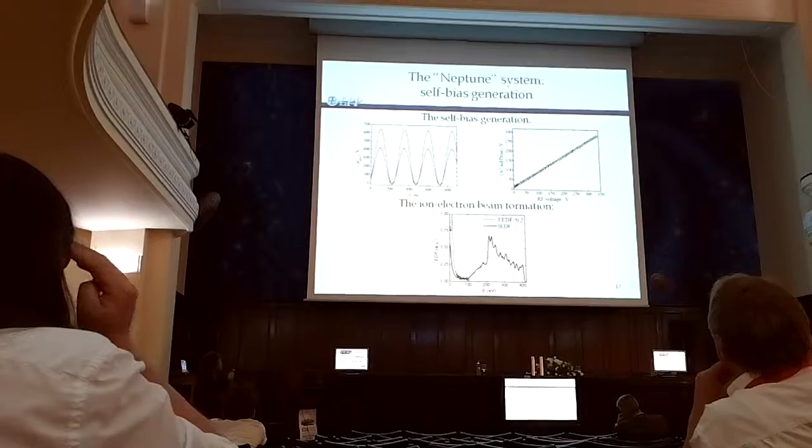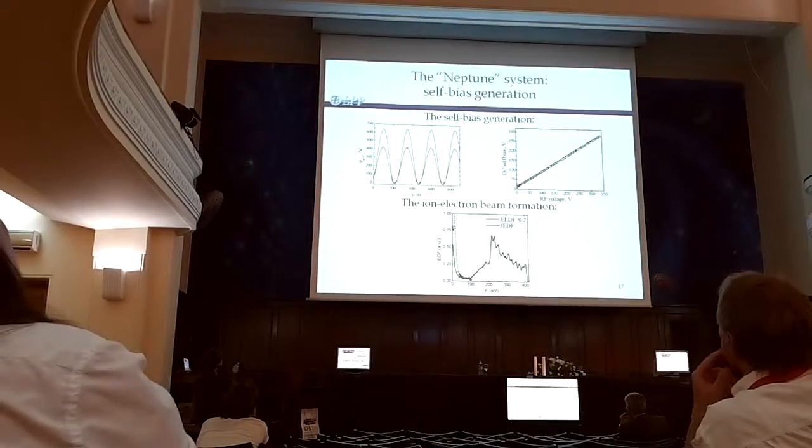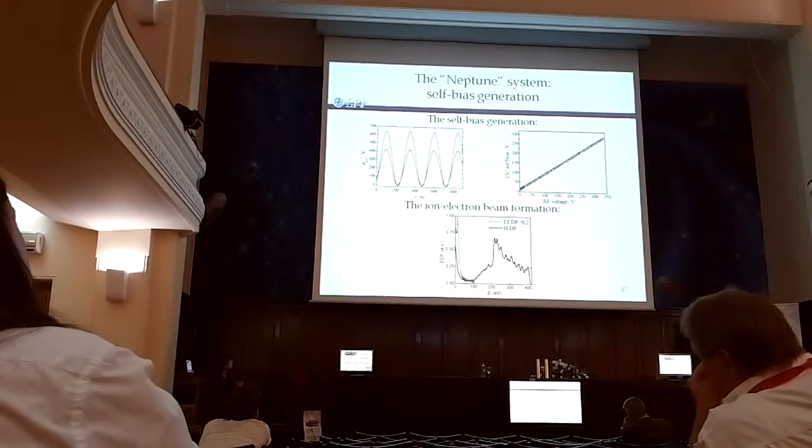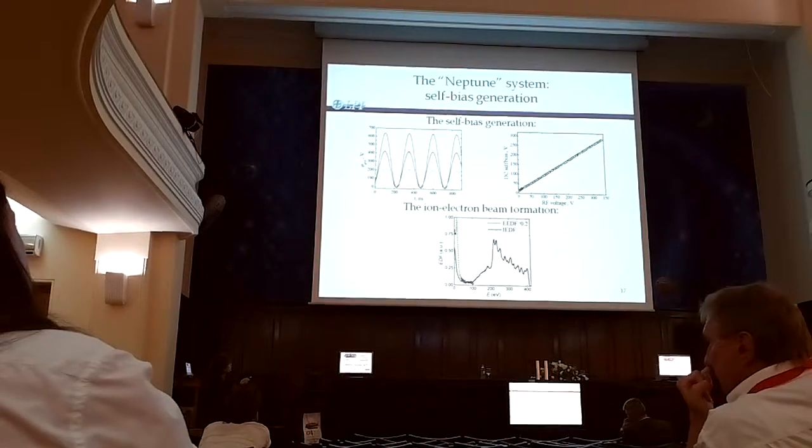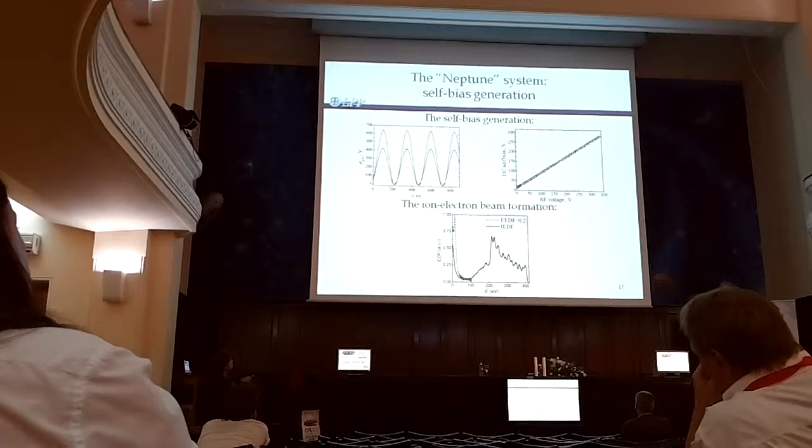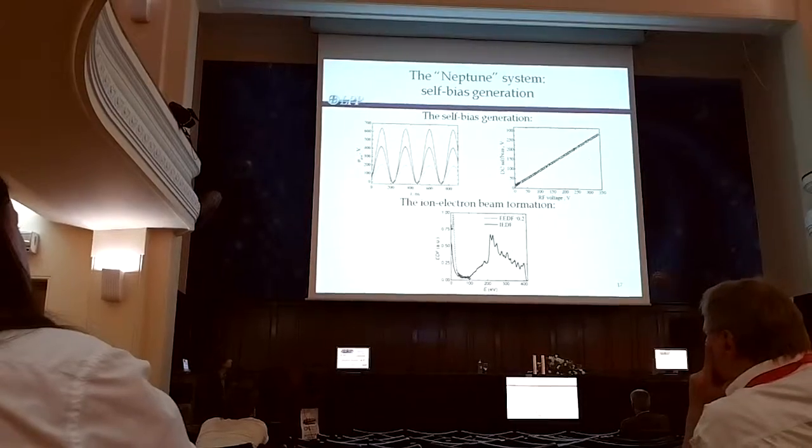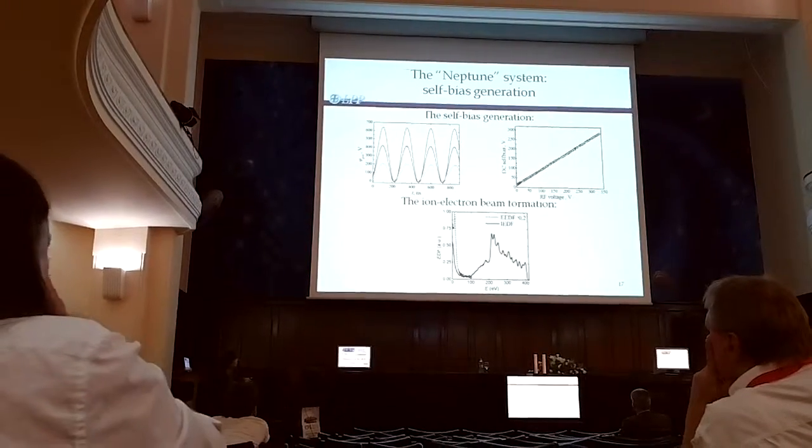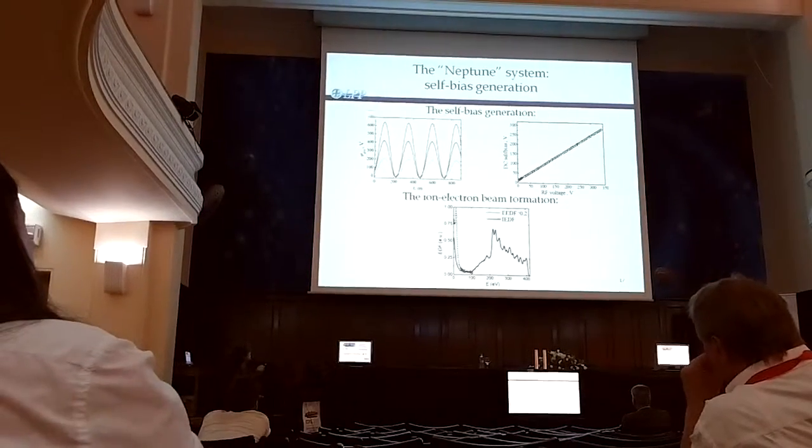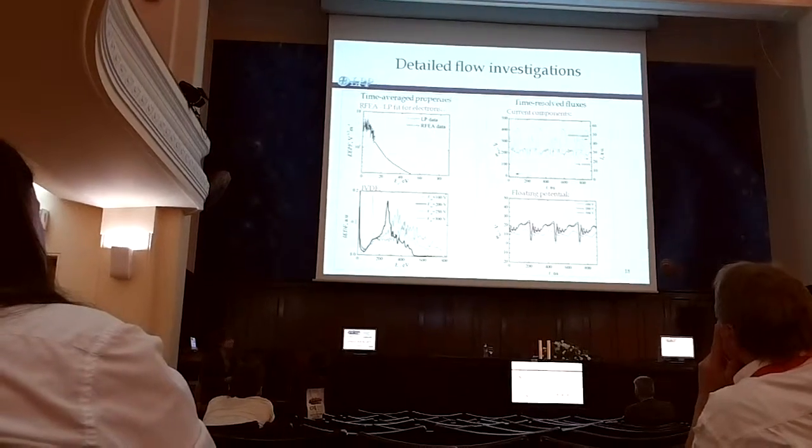Secondly, we measured that the recent self-bias generated at any voltage we apply. So, we apply RF voltage, different voltages, and we measured that it's averagely positive. Just, on the grid. And, here, it's a plot of DC self-bias generated, in the system, as a function of RF voltage, and it's just straight line, exactly like for CCP, as measured of CCP discharge. Also, we found that there is an ion acceleration, exactly like we expect, and there is an electron co-extraction. So, basically, the system works as it should work.